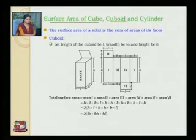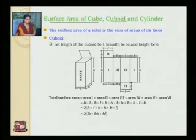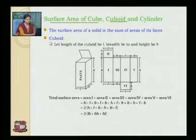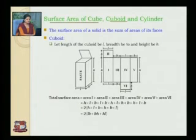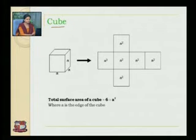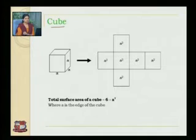That is equal to 2 into (l into h, plus b into h, plus b into l), which equals 2(LB plus BH plus HL). So the total surface area of a cuboid is given by 2(LB plus BH plus HL).